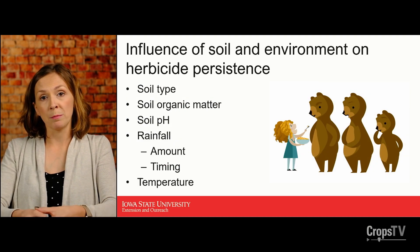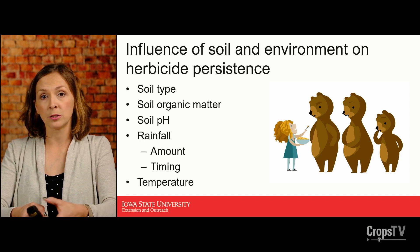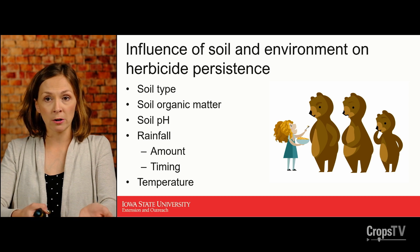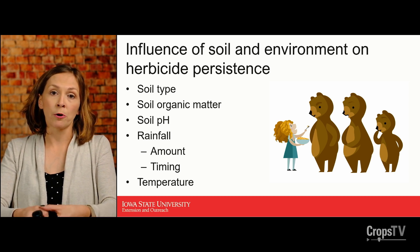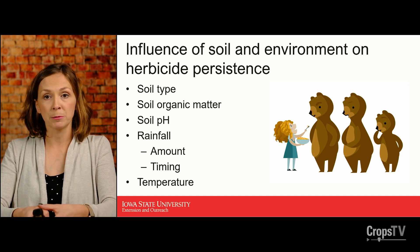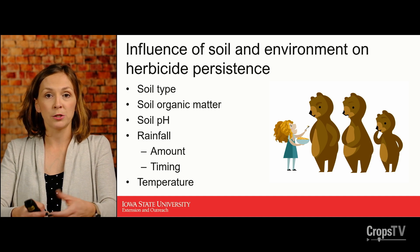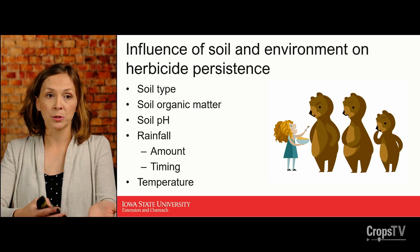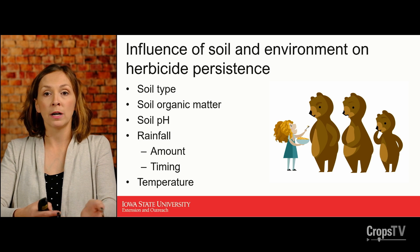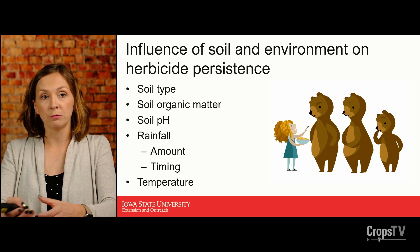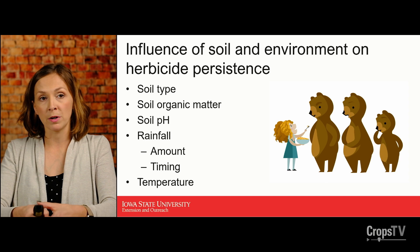Some of the things that primarily influence the persistence of a herbicide would be soil type and soil organic matter. Typically higher clay content soils and soils with more organic matter will have more herbicide binding sites, which could in some cases lead to increased persistence. Soil pH would be another factor — a Goldilocks situation where we prefer things not be too high or too low. Some chemistries are more persistent at low pHs versus other products being more persistent at high pHs.